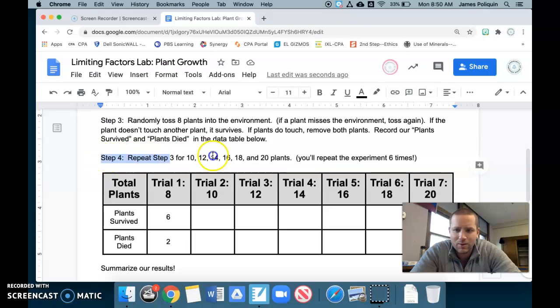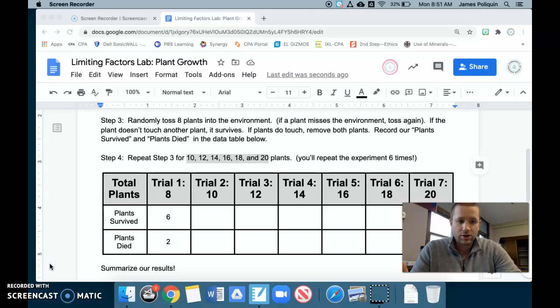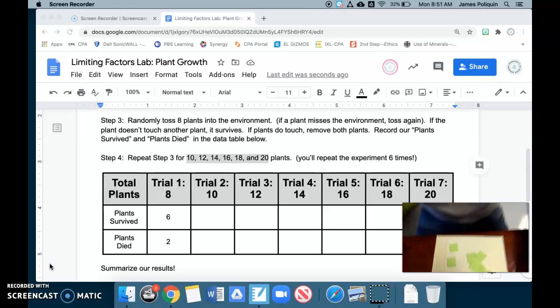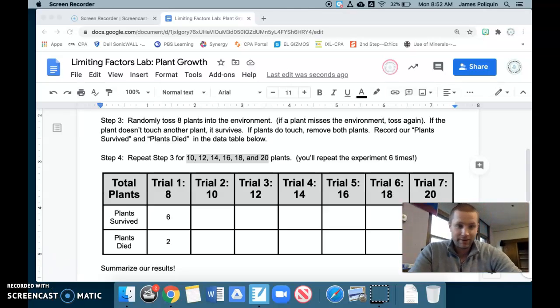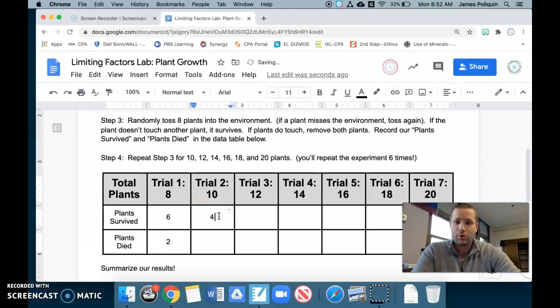Now, step four, we're going to repeat steps three. So we're going to repeat what we just did, but now we're going to toss 10 plants in and we'll do the same for 12, 14, 16, 18, and 20 plants. So I'm going to wipe off my ecosystem. It is clear. And I'm going to pause the video again and I will repeat for trial two. So I've tossed mine in randomly and let's take a look to what happened. Check it out. Pretty far. So check it out. I had one, two, three, four plants that survived. The other six happened to touch each other. Not a very good round, huh? But it happened. It's the truth. Not going to lie about it. So four plants survived, six plants died.